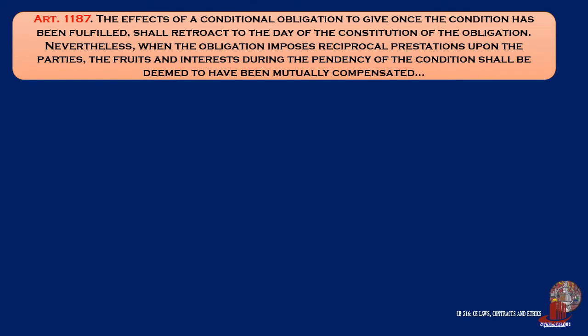Article 1187: The effects of a conditional obligation to give, once a condition has been fulfilled, shall retroact to the day of the constitution of the obligation. Nevertheless, when the obligation imposes reciprocal prestations upon the parties, the fruits and interests during the dependency of the condition shall be deemed to have mutually compensated. If the obligation is unilateral, the debtor shall appropriate the fruits and interests received unless, from the nature and circumstances of the obligation, it should be inferred that the intention of the person constituting the same was different. In obligations to do and not to do, the courts shall determine in each case the retroactive effect of the condition that has been complied with.